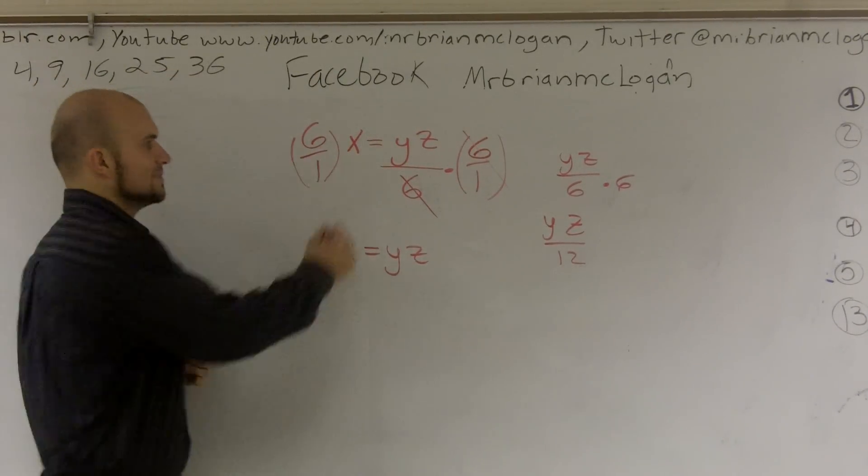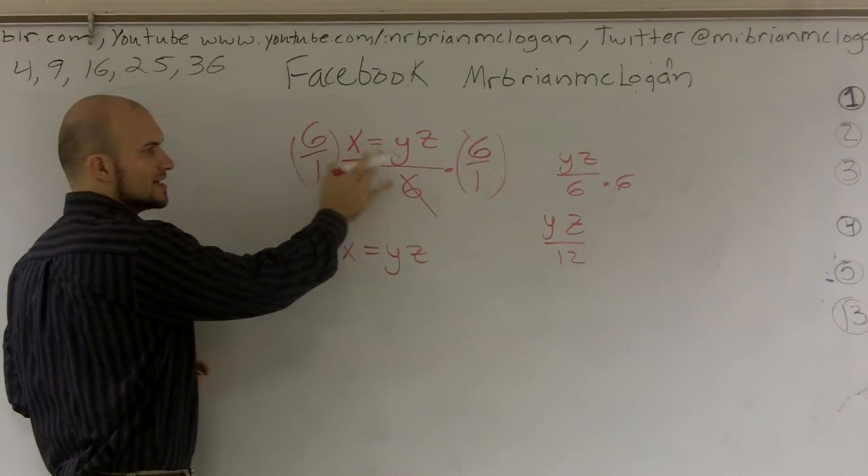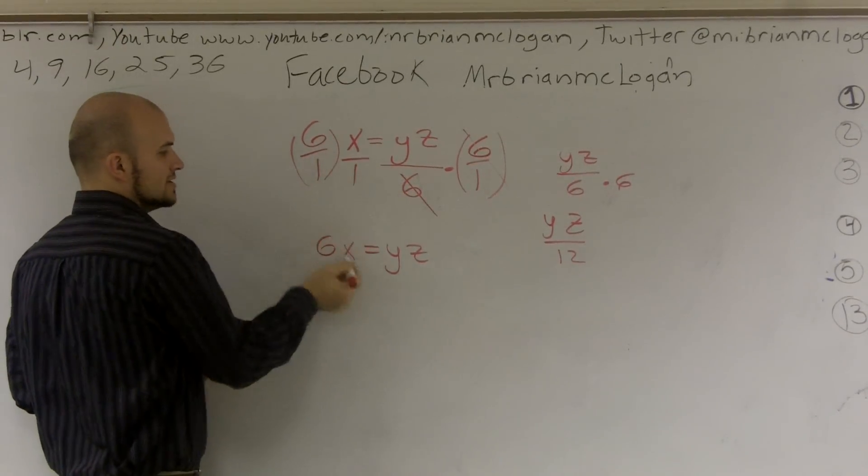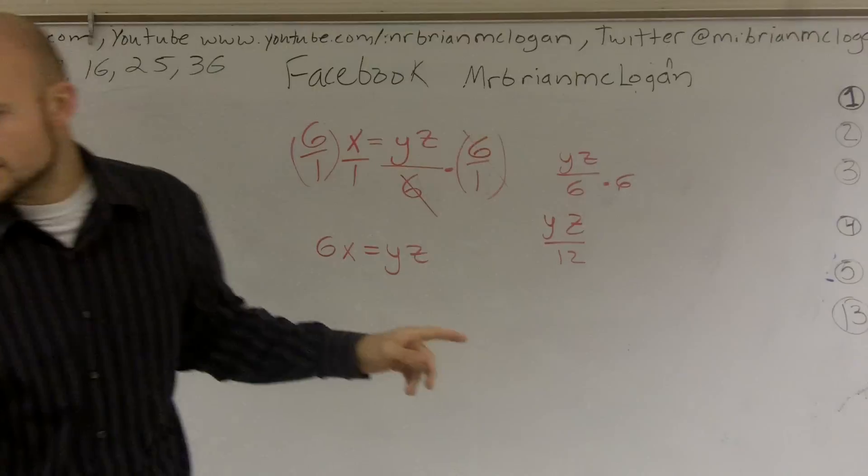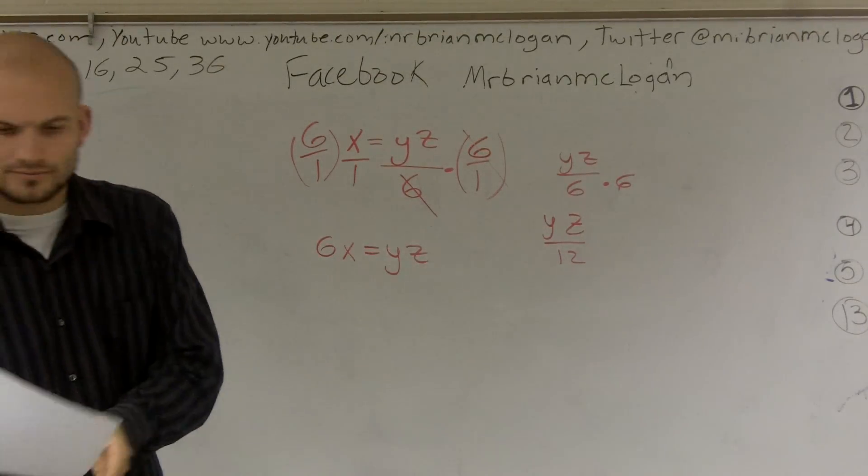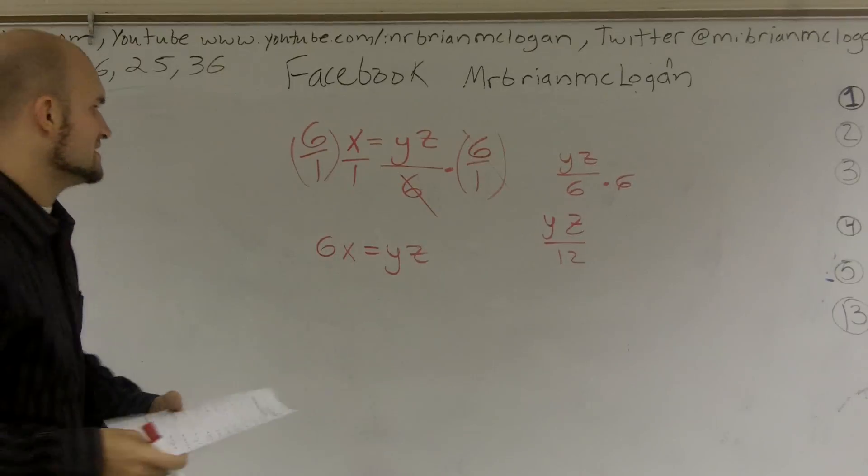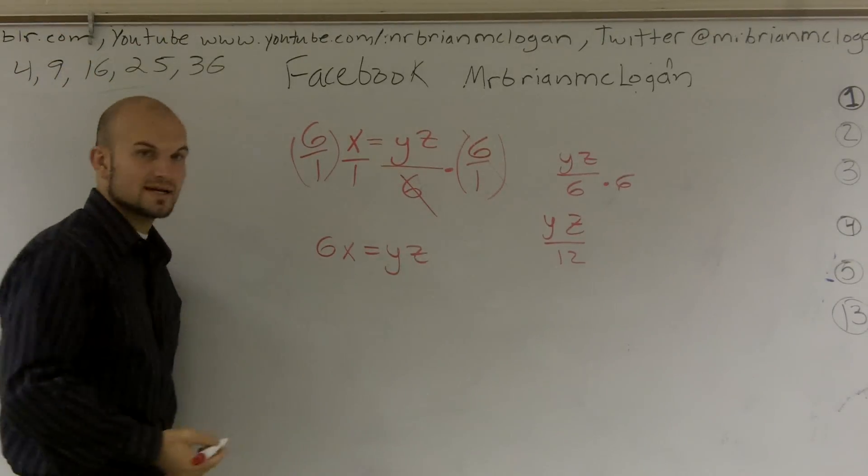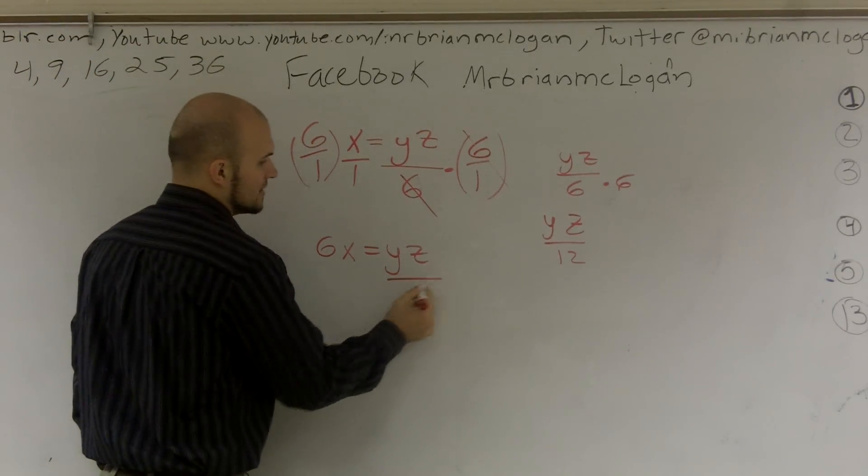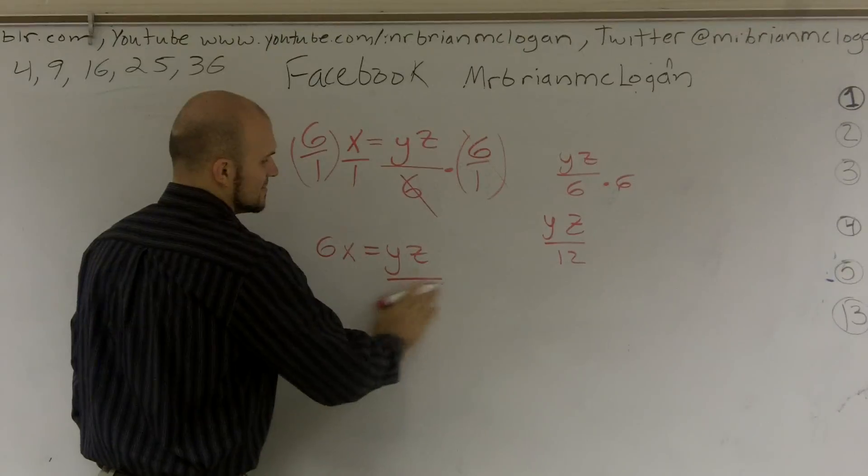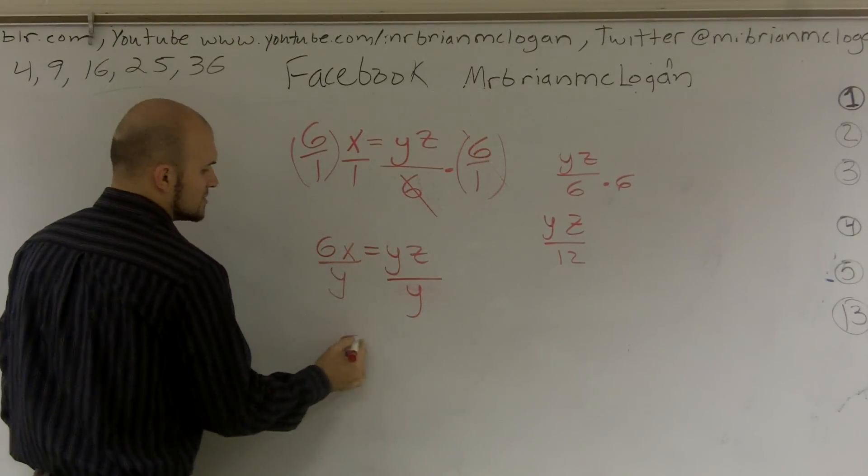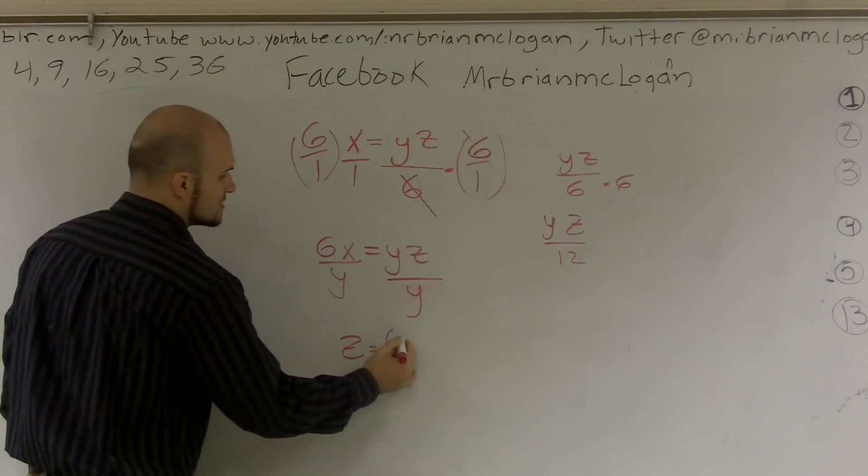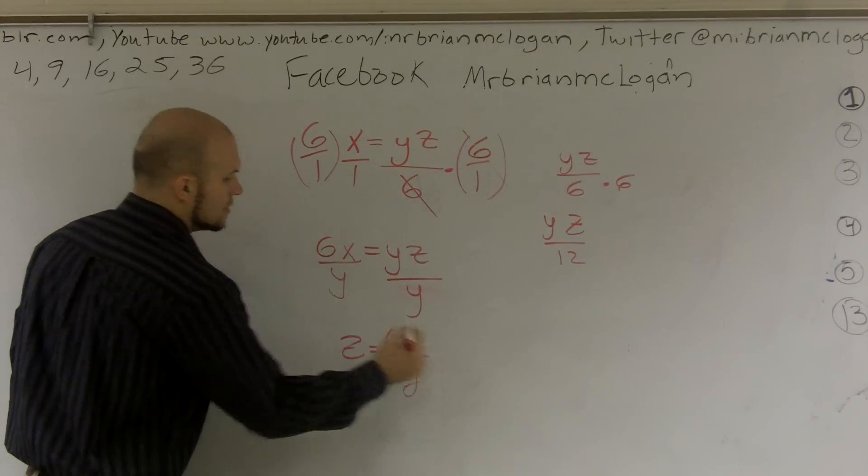You good with this? And then here's the same thing. You just make them as numerator times numerator. These are all over 1, so it equals 6x. Then the actual problem asks me to solve for which one? It wants me to solve for z. So now I look at this. What's happening to my z? It's being multiplied by y, so I'm going to want to divide by y. So my final answer is z equals 6x over y.